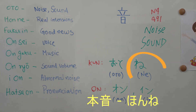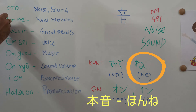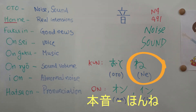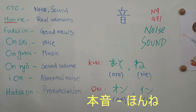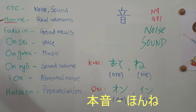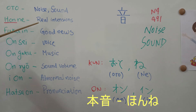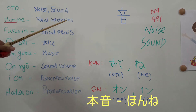The next word is 'Honne.' Here, 'Hon' refers to the meaning of real or original — it also stands for 'book' and is a counter for cylindrical objects. So 'Honne' means original sound, and refers to one's real intentions.